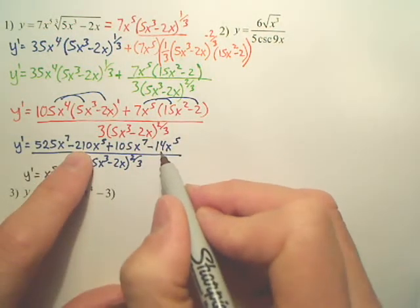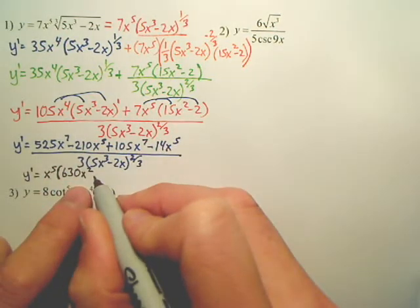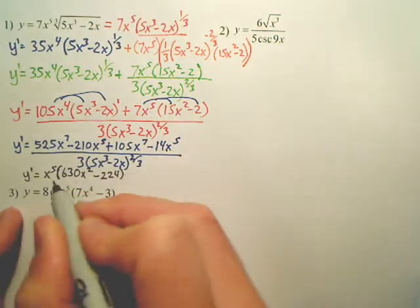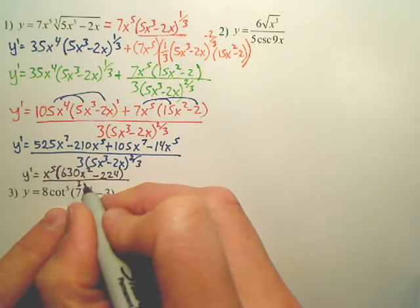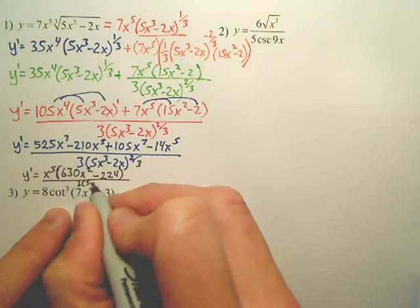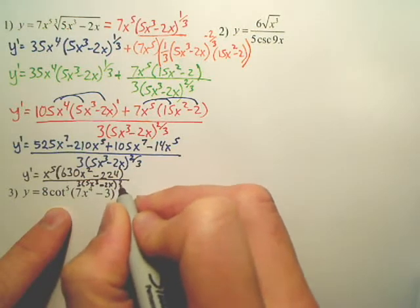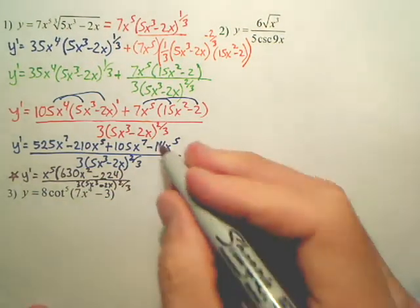3, 5x to the 3rd minus 2x to the 2/3. That is my answer.